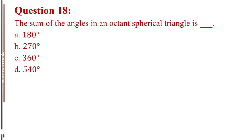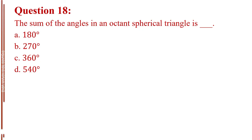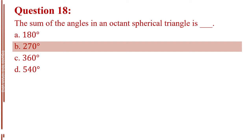Question number eighteen. The sum of the angles in an octant spherical triangle is blank. Letter A, 180 degrees. Letter B, 270 degrees. Letter C, 360 degrees. Letter D, 540 degrees. The answer is Letter B, 270 degrees.